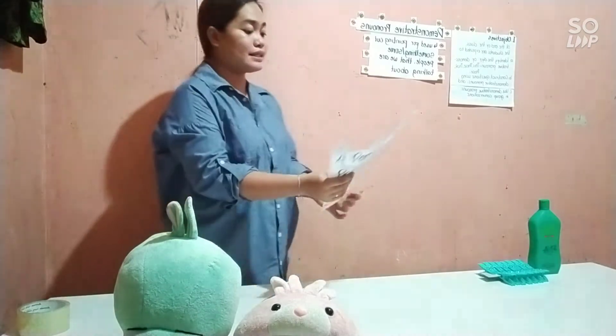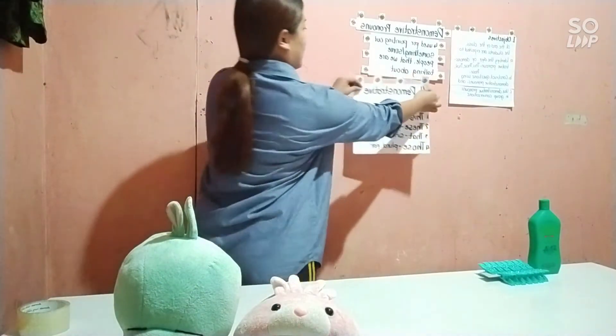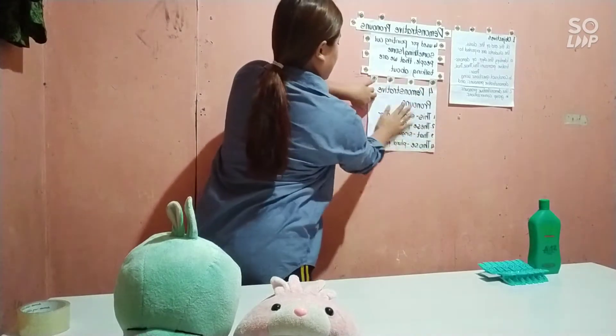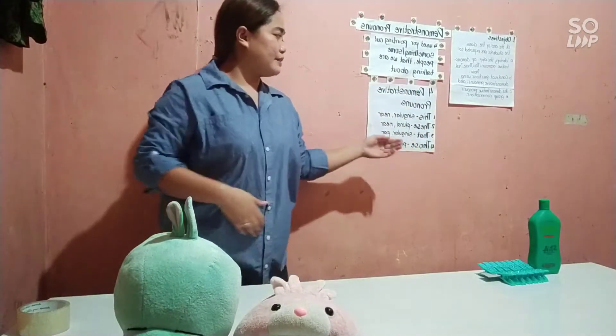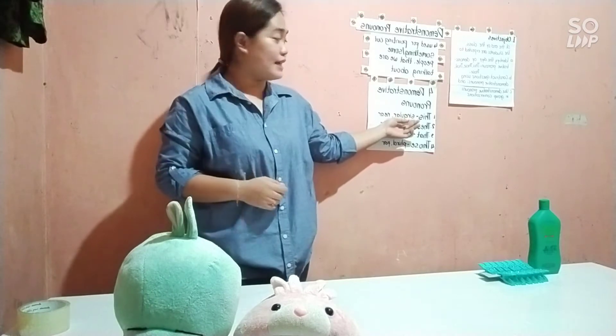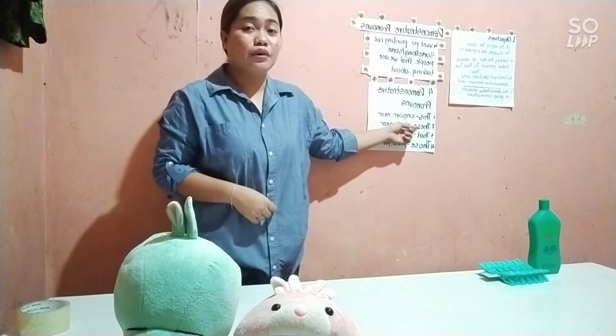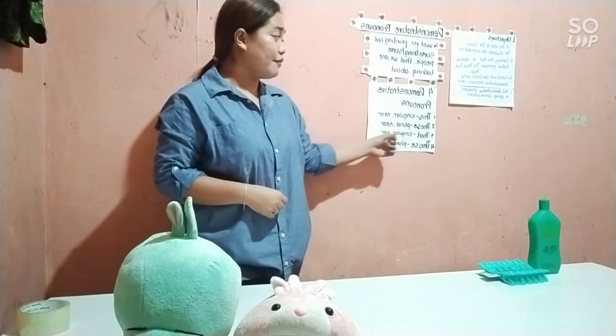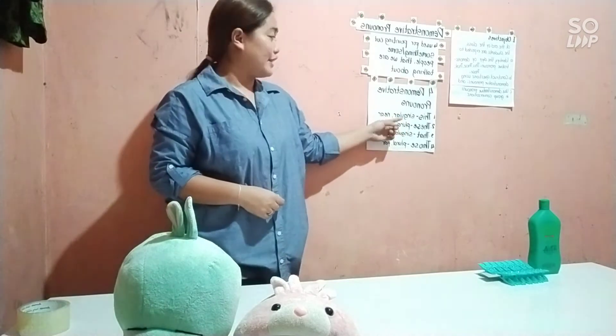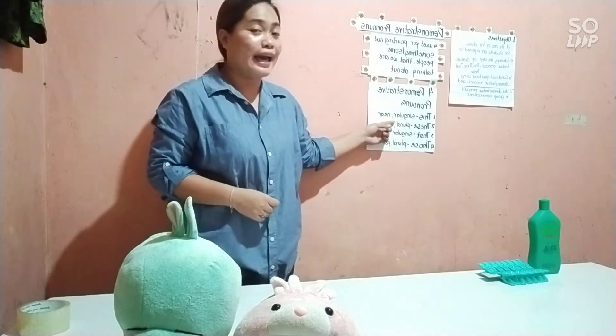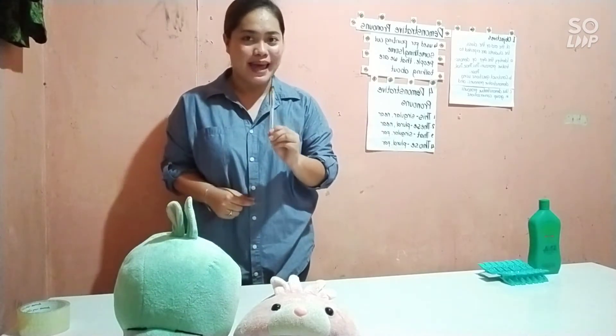So, what are the four demonstrative pronouns? The first demonstrative pronoun is 'this.' When are we going to use the demonstrative pronoun 'this'? If it is singular and near. Again, if it is singular and near. For example, this is my pen.